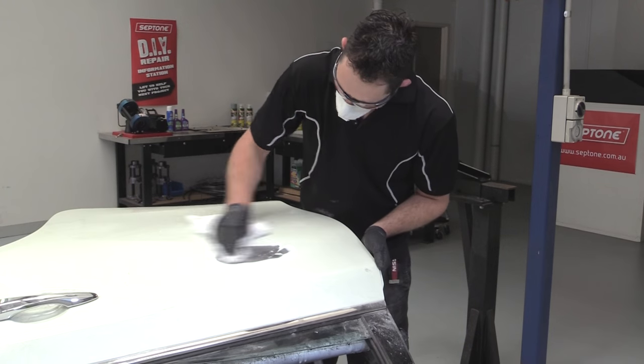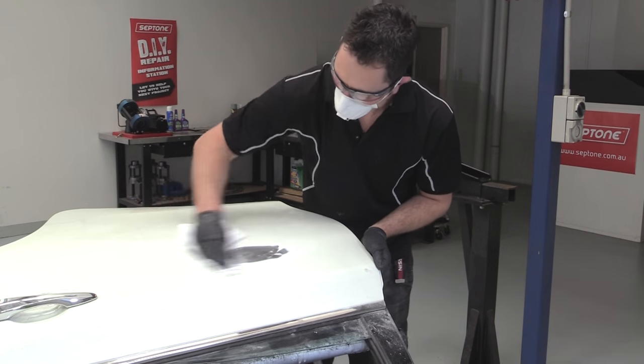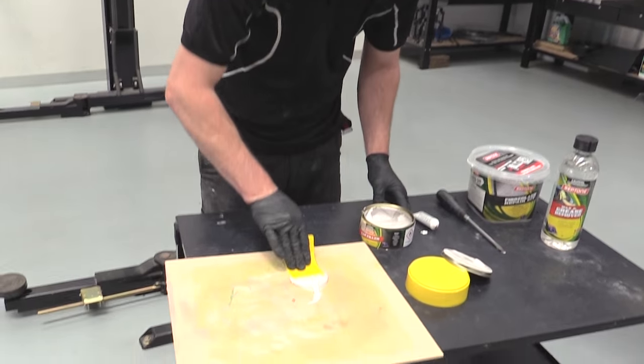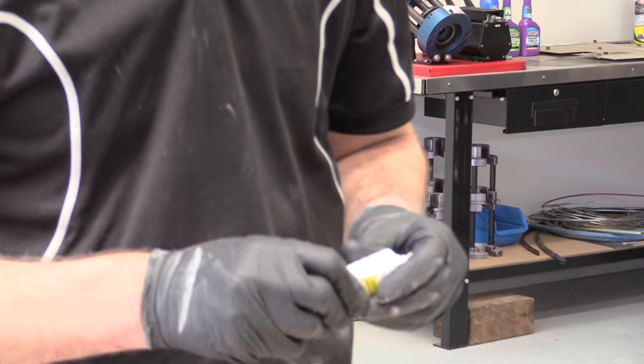Clean the area with Septone wax and grease remover with a lint-free cloth. Place the required amount of car filler onto a mixing board, something like an old ice cream container lid. Do not use cardboard.